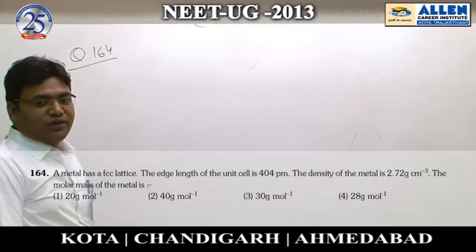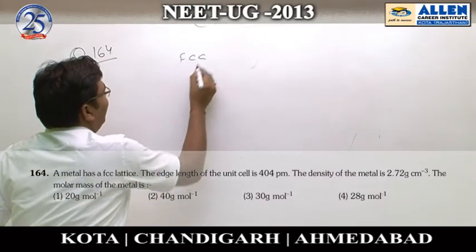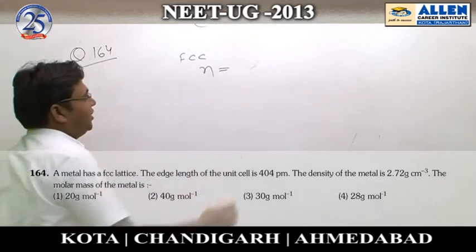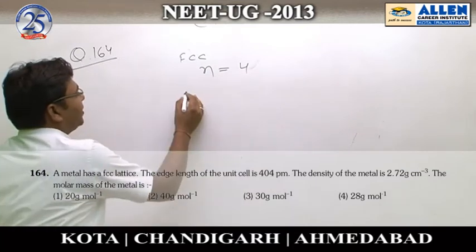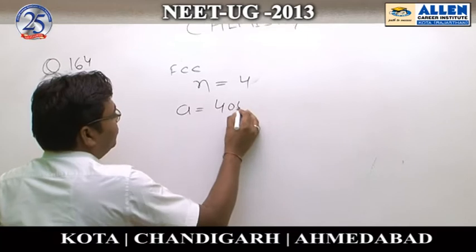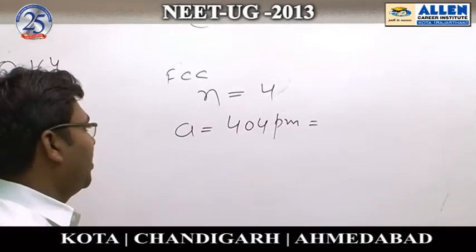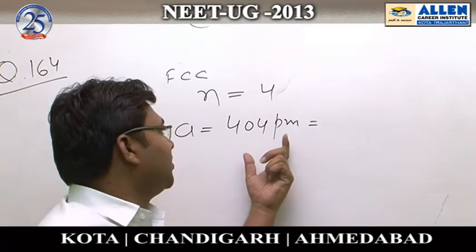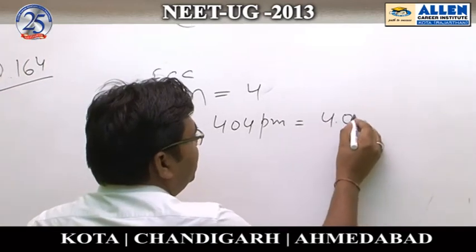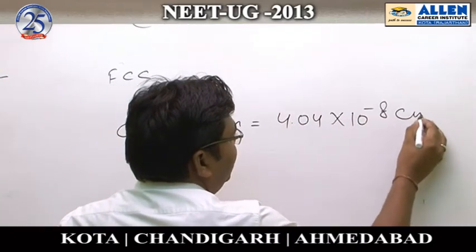For the given metal, the structure is FCC. For FCC, the number of atoms present per unit cell is 4. The given length of the unit cell is 404 picometers, which we convert to 4.04×10⁻⁸ centimeters.